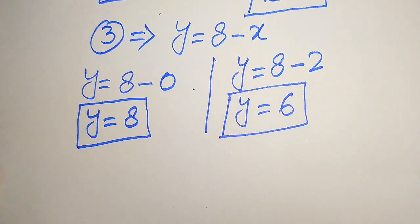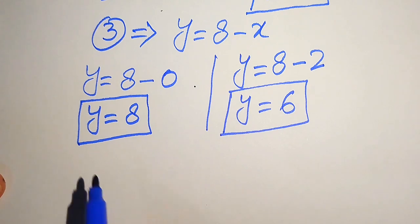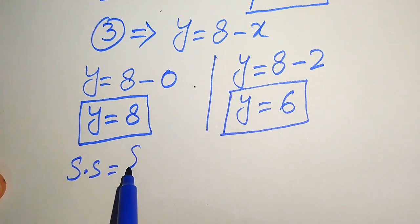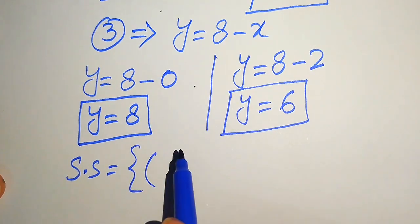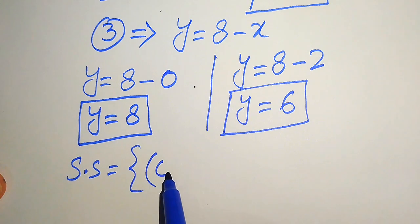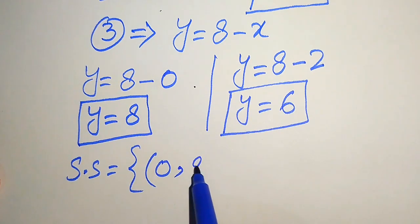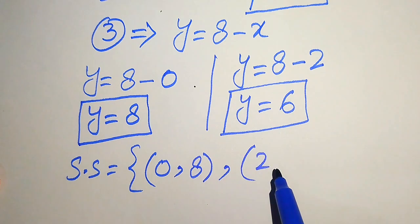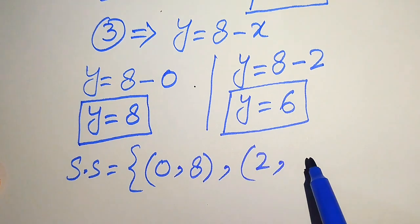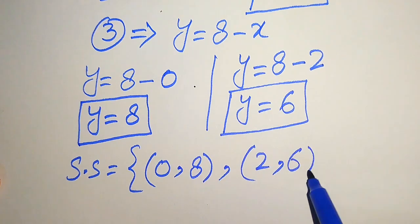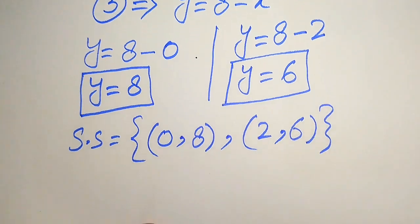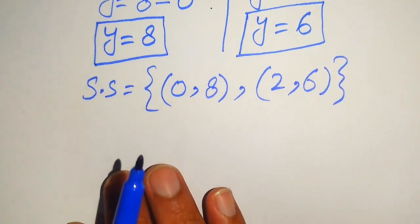There are two solutions to the given equations. When x equals 0, the corresponding value of y is 8, and when x equals 2, the corresponding value of y is 6. These are the two solution sets of the given equations.